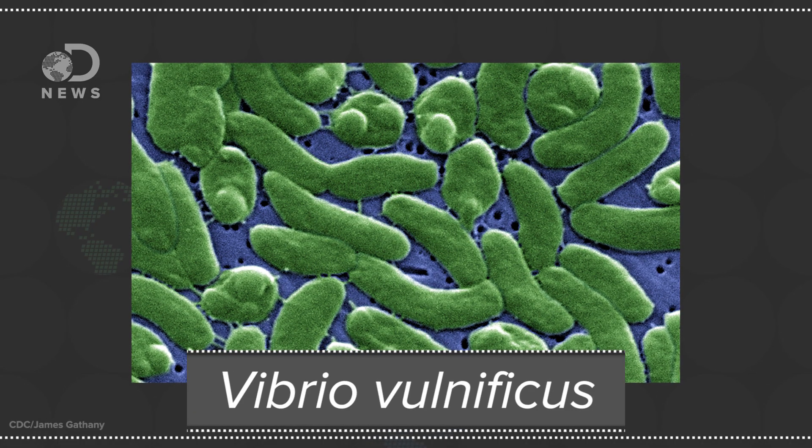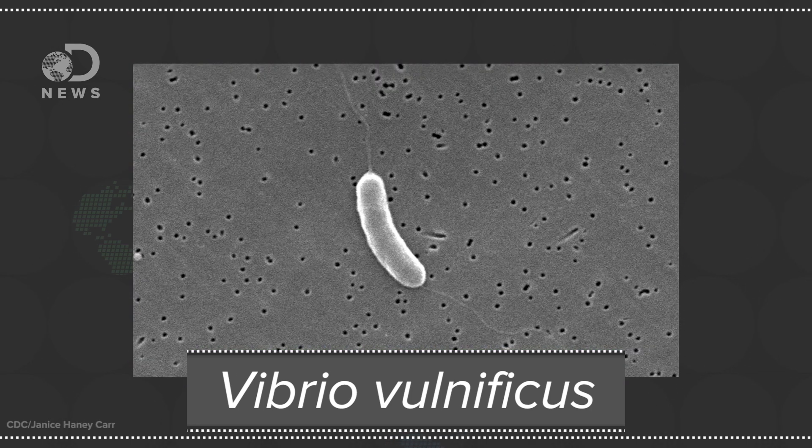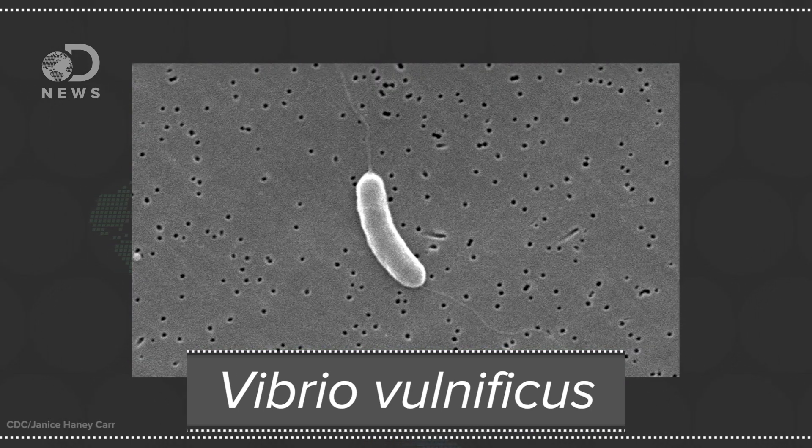Climate change might be doing more than revive frozen microbes north of the Arctic Circle. It could be helping microbes closer to the equator too, like Vibrio vulnificus. That little guy is also known as a flesh-eating bacteria, and it does well in warm and brackish waters.